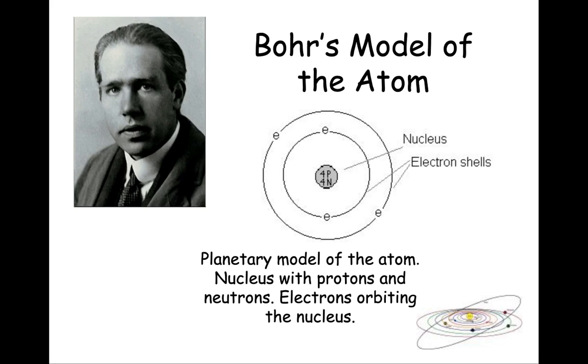So what he proposed was this planetary model of the atom where the electrons he said were found at discrete distances. He reasoned that if the light was being released at these certain wavelengths, then electrons can only have certain energies